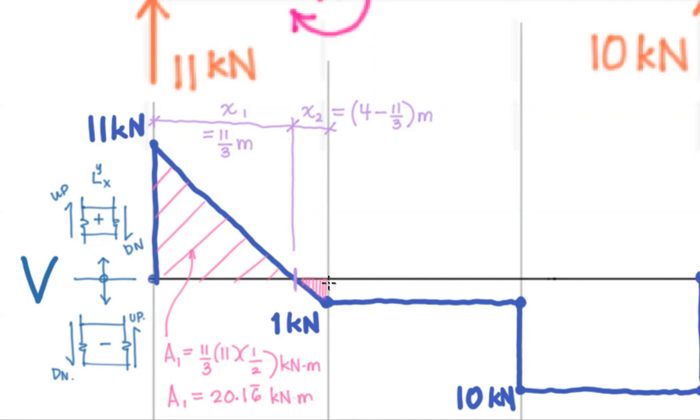Next up, we need the little triangle. I'll call that area two. And I'm going to do all my areas as magnitudes. Again, I know some people like to put signs to show whether the areas are positive or negative. I'm going to choose just to calculate these as magnitudes in this step. So we've got a base of that's x2, so four minus 11 thirds meters, we have a height of one kilonewton, all that divided by two because it's a triangle, that's in kilonewtons times meters. And that works out to be 0.16 bar kilonewtons times meters.